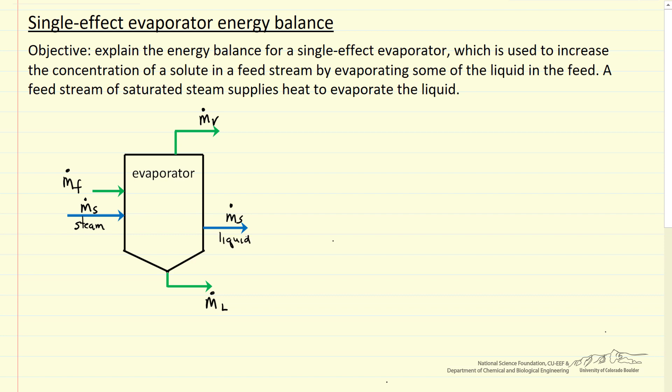The energy from condensing the steam evaporates the liquid. Let's look at some additional labels. The steam temperature is called T_S, and it's going to be the same temperature because we're assuming saturated liquid exiting and saturated vapor entering. The evaporator temperature we'll call T_1. That's the same temperature throughout. We're assuming it's well mixed.